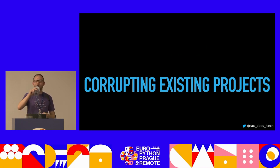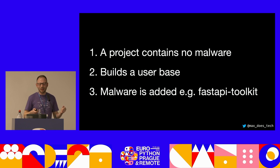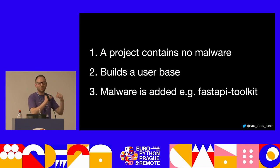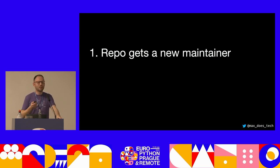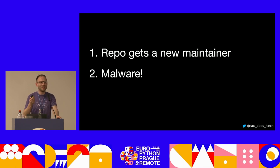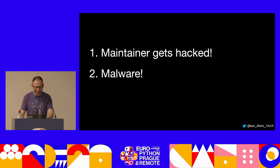The other method is corrupting existing projects. One way: a project starts normal, builds a user base, then adds malware in a later release — this was the case for a package called FastAPI toolkit. Alternatively, a repo gets a new maintainer who eventually adds malware after gaining commit rights. Or a maintainer simply gets hacked — people can get socially engineered. You've got to trust who you're actually letting have the keys.